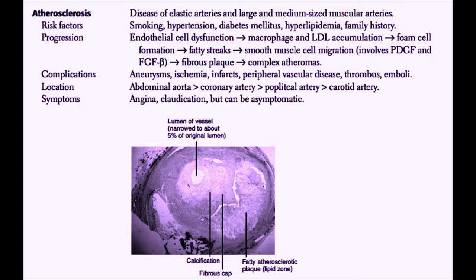Atherosclerosis is a disease of the elastic arteries and the large and medium-sized muscular arteries — so that includes the aorta, the renal arteries, the coronary arteries, and the cerebral arteries. Arteries with atherosclerosis will generally be narrowed due to infiltration with lipid as well as calcification. The risk factors for atherosclerosis include smoking, hypertension, uncontrolled diabetes mellitus, hyperlipidemia, and a positive family history.